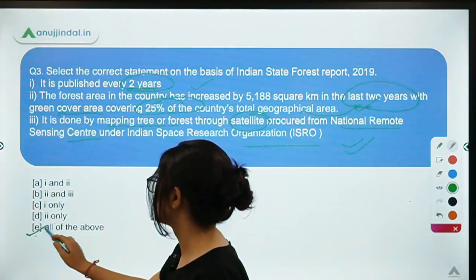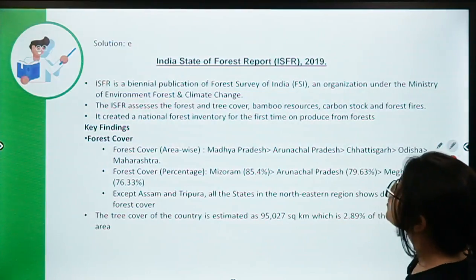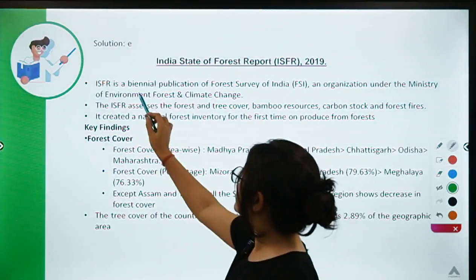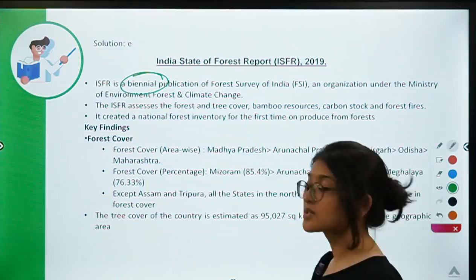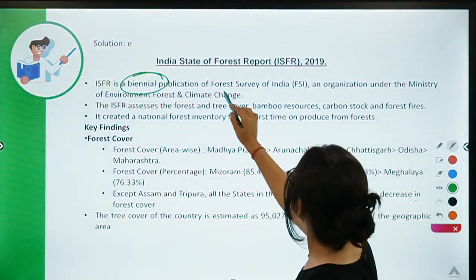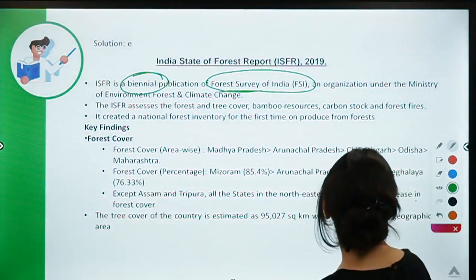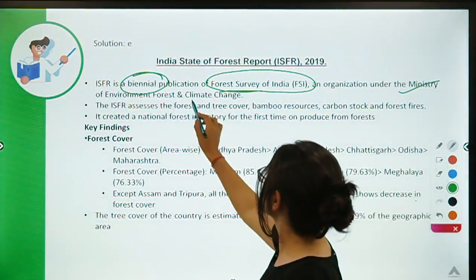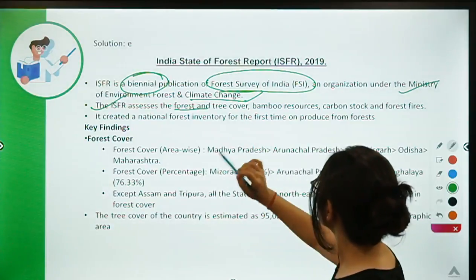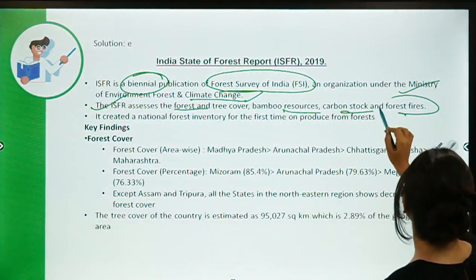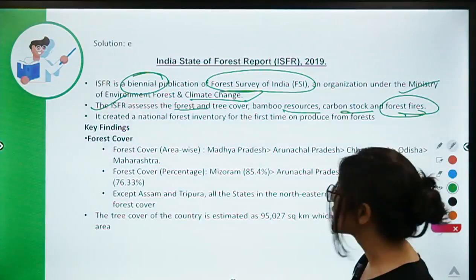The answer is 'all of the above.' The Indian State Forest Report 2019 is a biennial publication, published every two years by the Forest Survey of India, which comes under the Ministry of Environment, Forest and Climate Change. The ISFR assesses forest and tree cover, bamboo resources, carbon stock and forest fires.